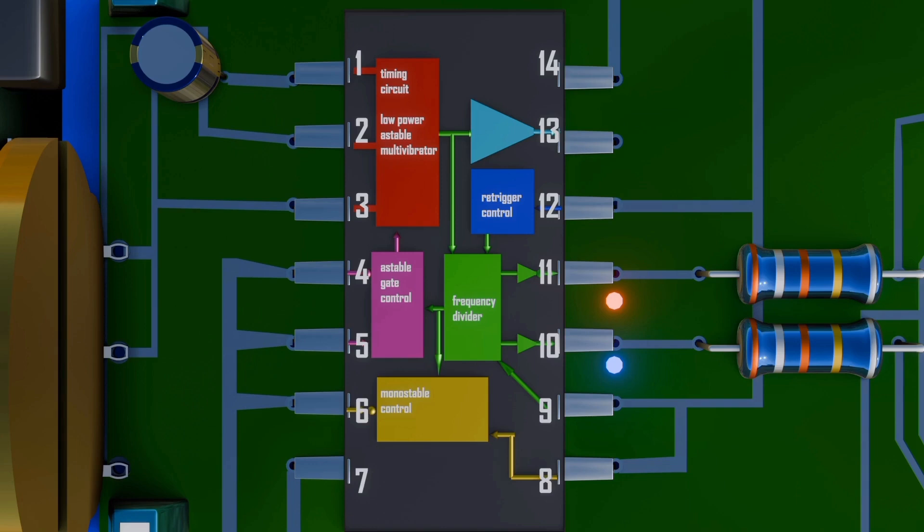The CD4047 has 14 terminals. Pin 1 is connected to the external capacitor. Pin 2 is connected to the external resistor. Pin 3 is a common pin for establishing a connection with resistor and capacitor. Pin 4 is for astable and must be kept low when used in astable mode. Pin 5 is still astable and must be kept high when used in astable mode. When I say high, it means state 1 or on state, and when it is low, it means state 0 or off state.